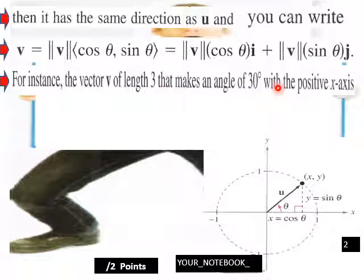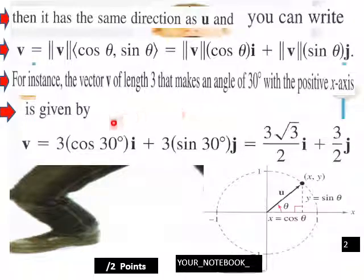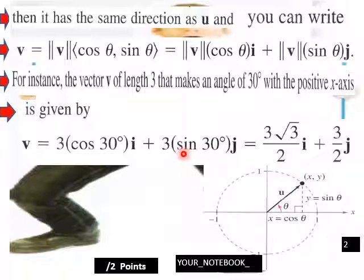For instance, the vector v of length three that makes an angle of 30 degrees with the positive x-axis is given by v equals 3·cos30° i plus 3·sin30° j. Plugging in exact values: cosine 30° gives three times (√3/2) i, and sine 30° gives three times (1/2) j.